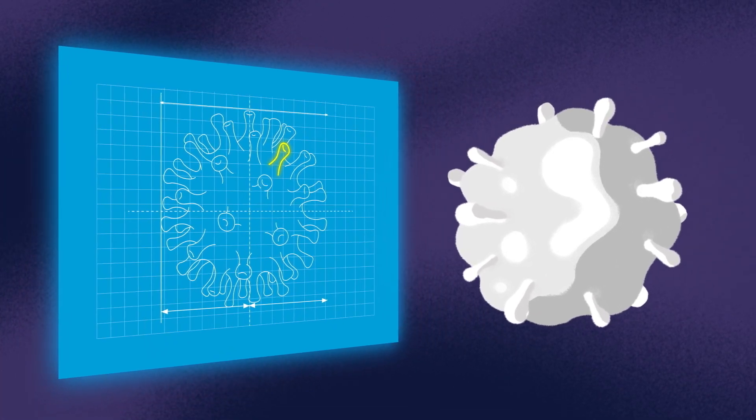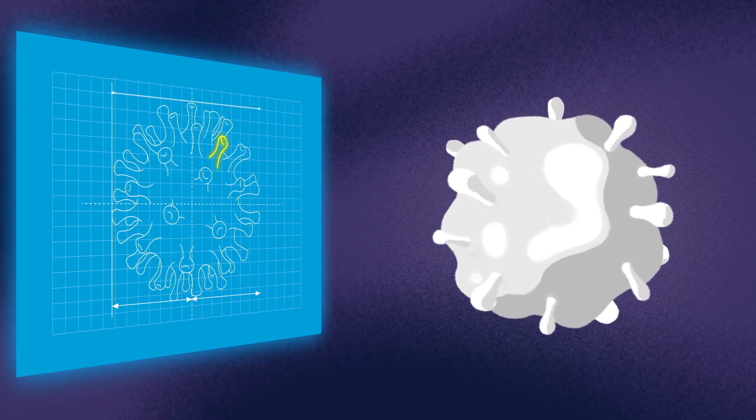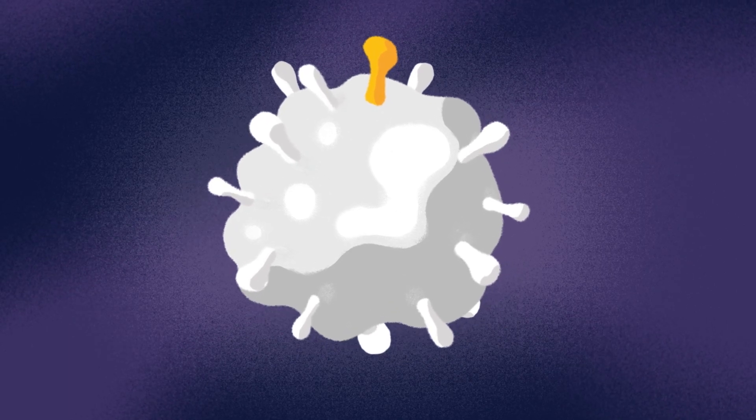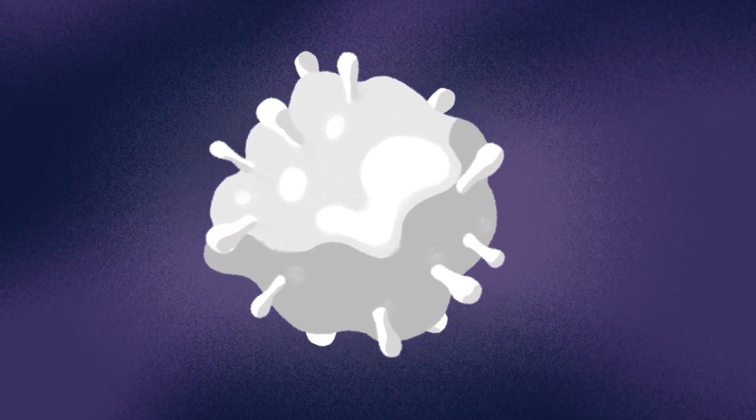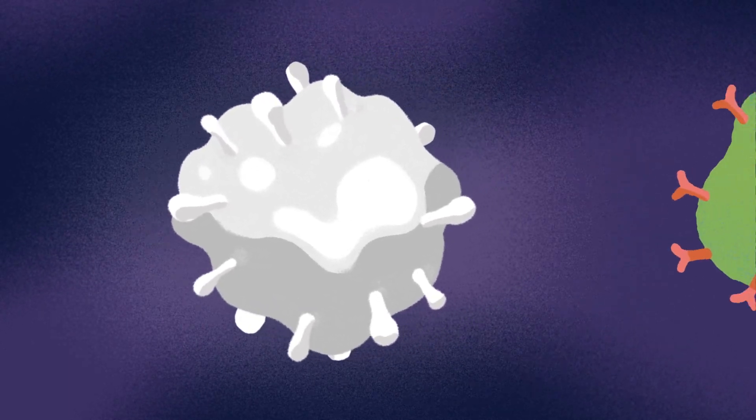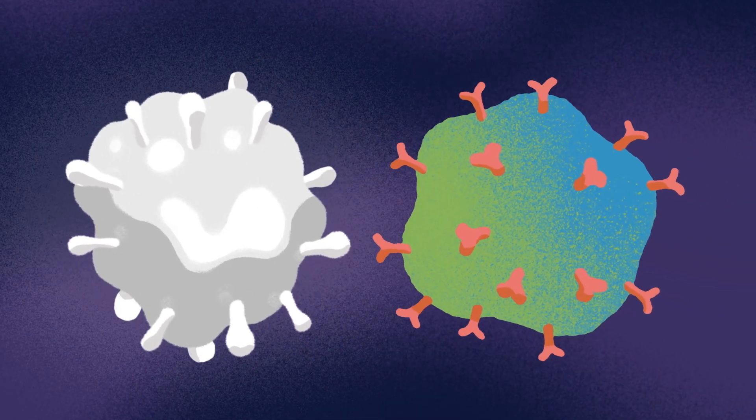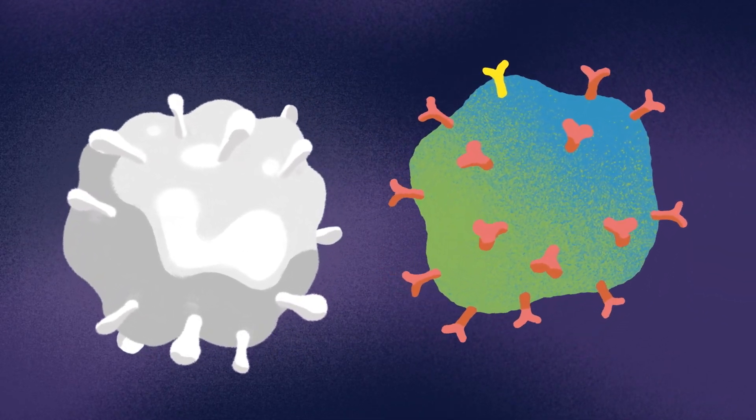Scientists realized that they could teach the immune cells in your body to make the spiky parts and then practice destroying it. That way if you ever got the real virus, your cells would see the spiky parts on the virus and get rid of it.